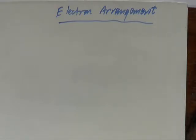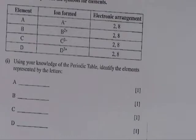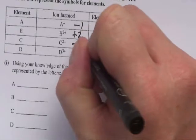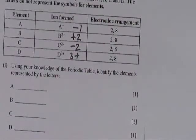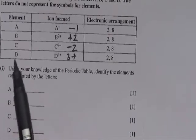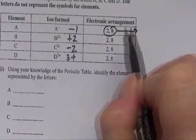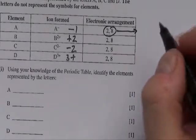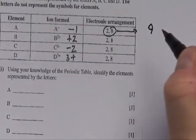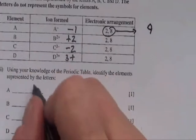Let's have a look at a couple of past paper questions. We've been given some data with electron arrangements and charges. A has electron arrangement 2,8 and a −1 charge — so it has ten electrons. It must have originally had nine electrons, meaning nine protons. Going to the periodic table to find the element with nine protons — that is fluorine. So A is fluorine.